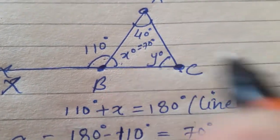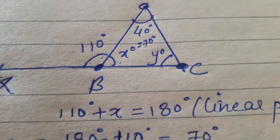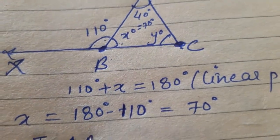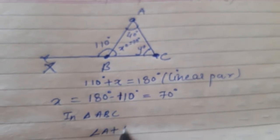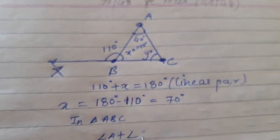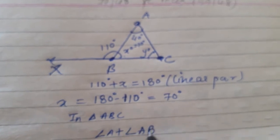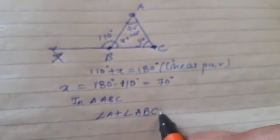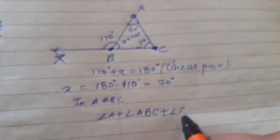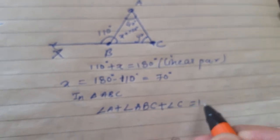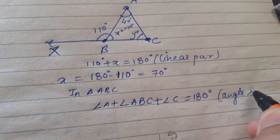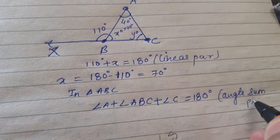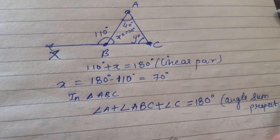So we have written here 70 degrees. Now in triangle ABC, angle A plus angle ABC plus angle C is equal to 180 degrees. Why? Angle sum property.